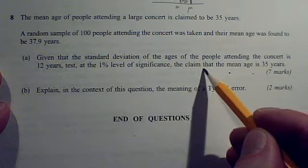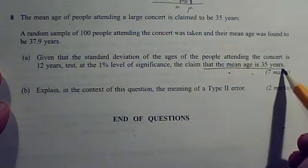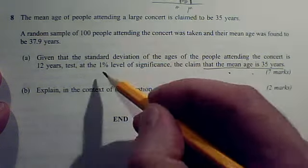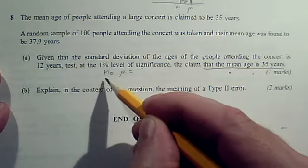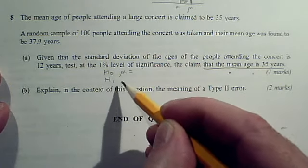The claim we're testing is that the mean age is 35 years. So you need to start with a null hypothesis, which is always mu equals something. And you've got to think a little bit about your alternative hypothesis.